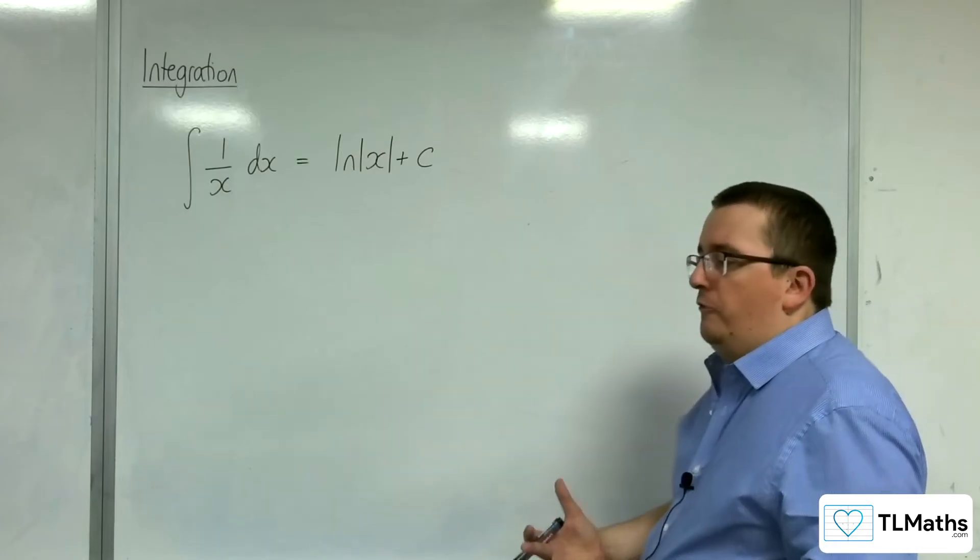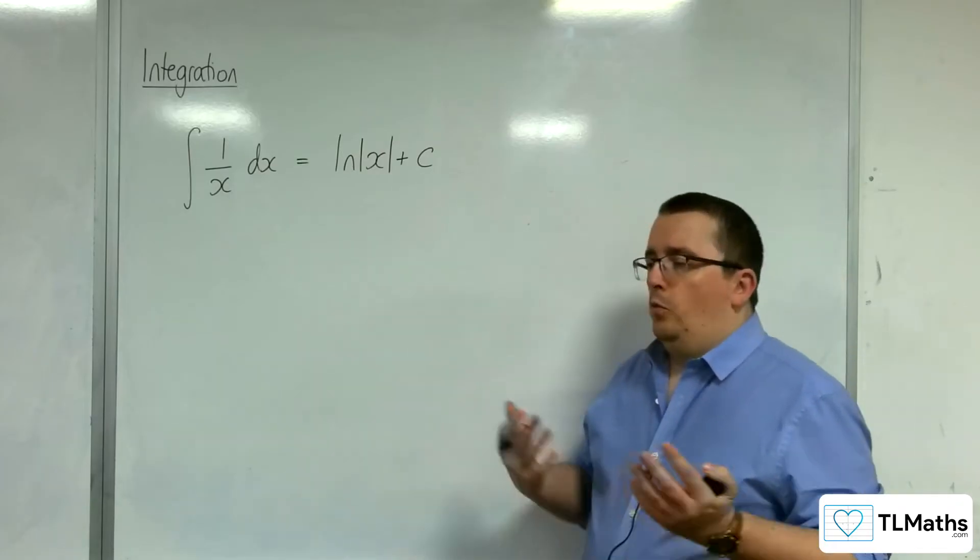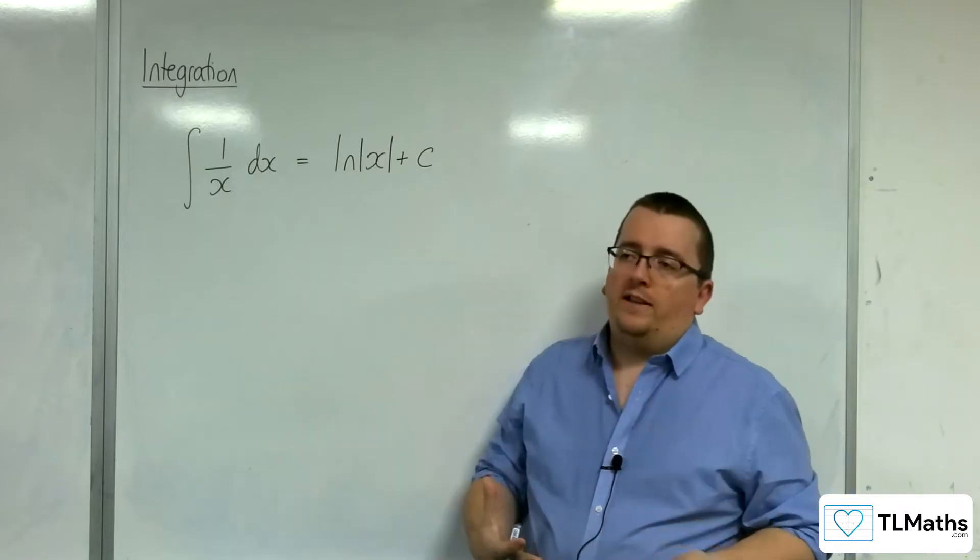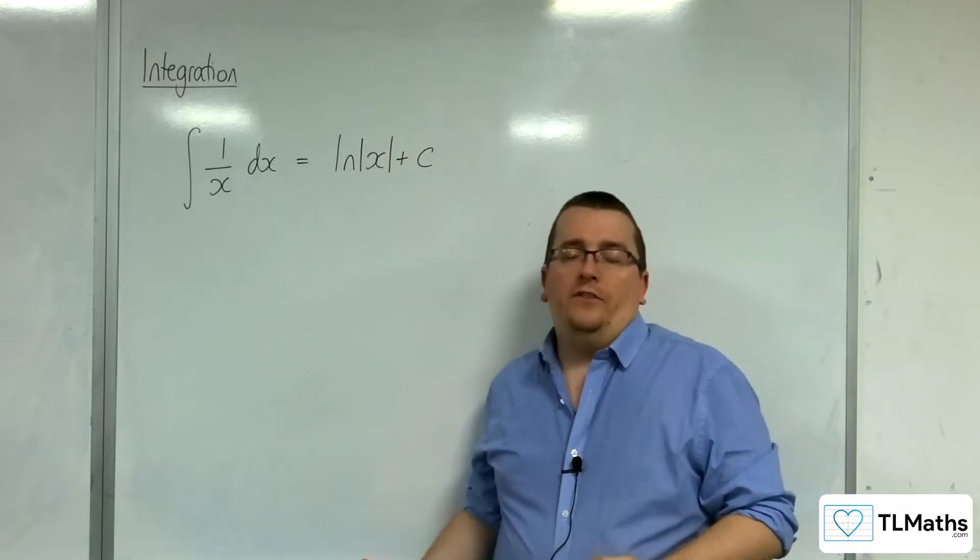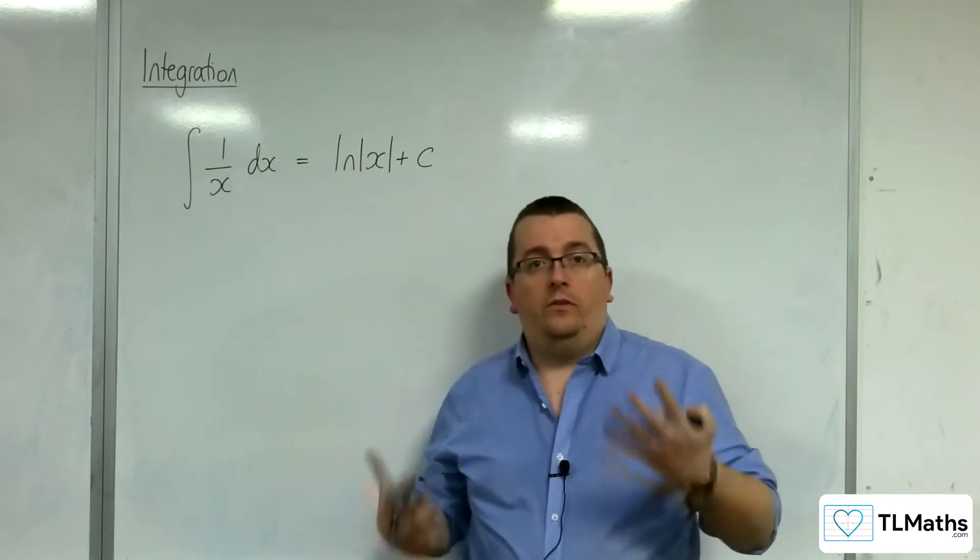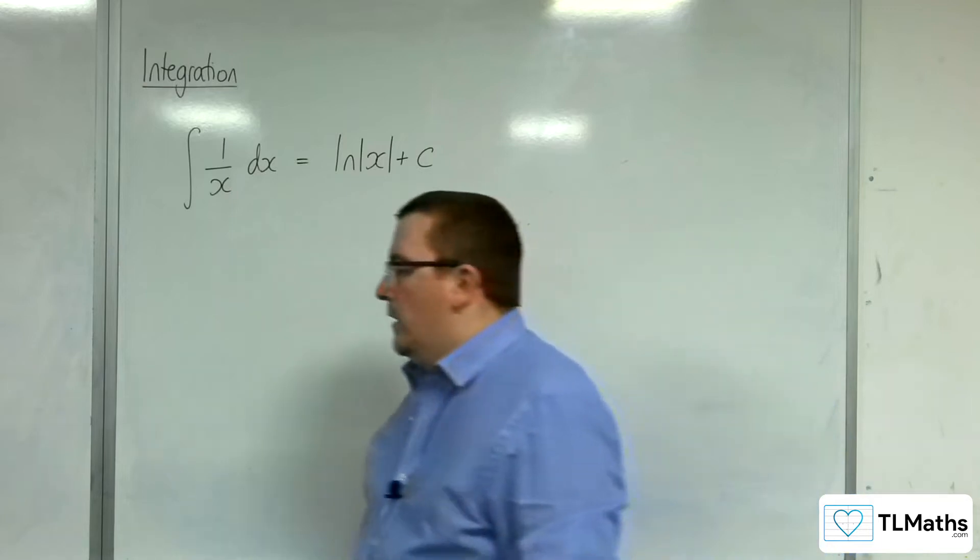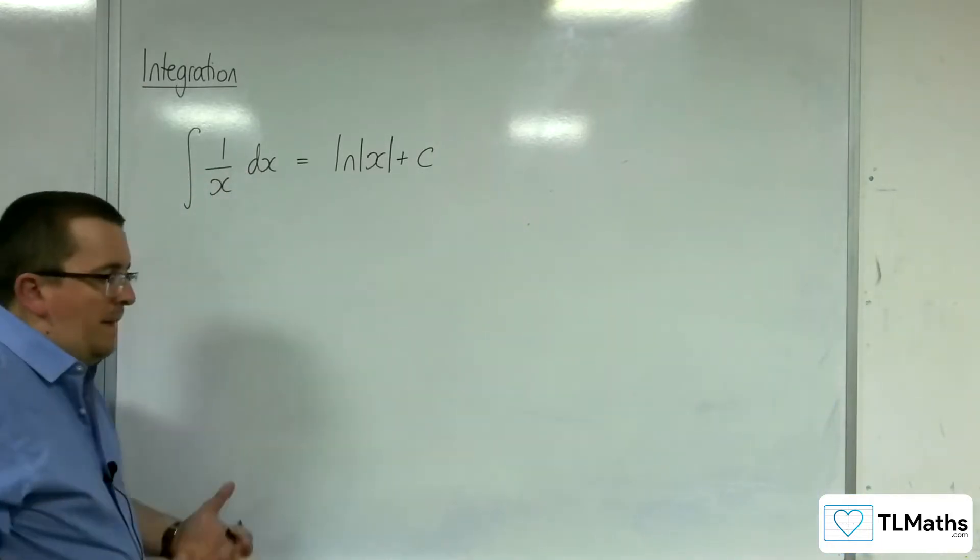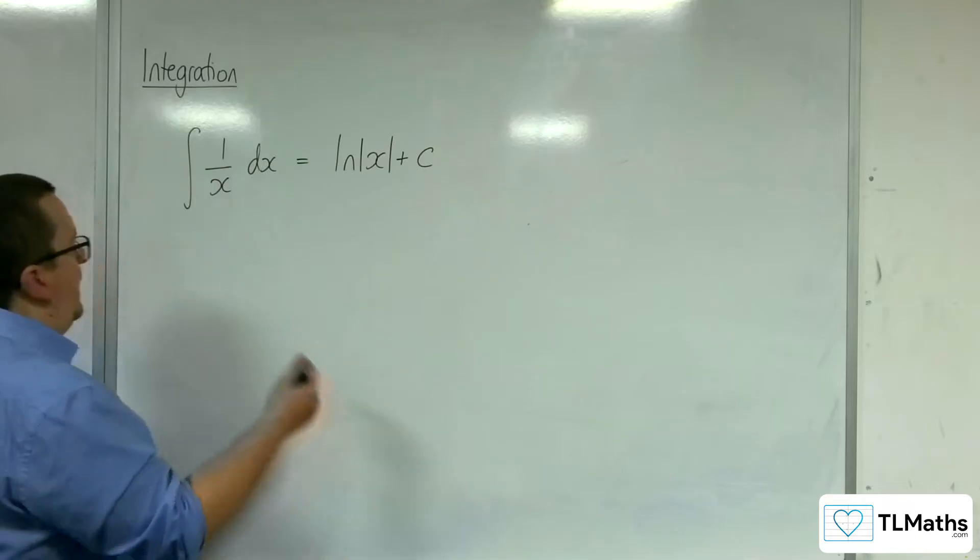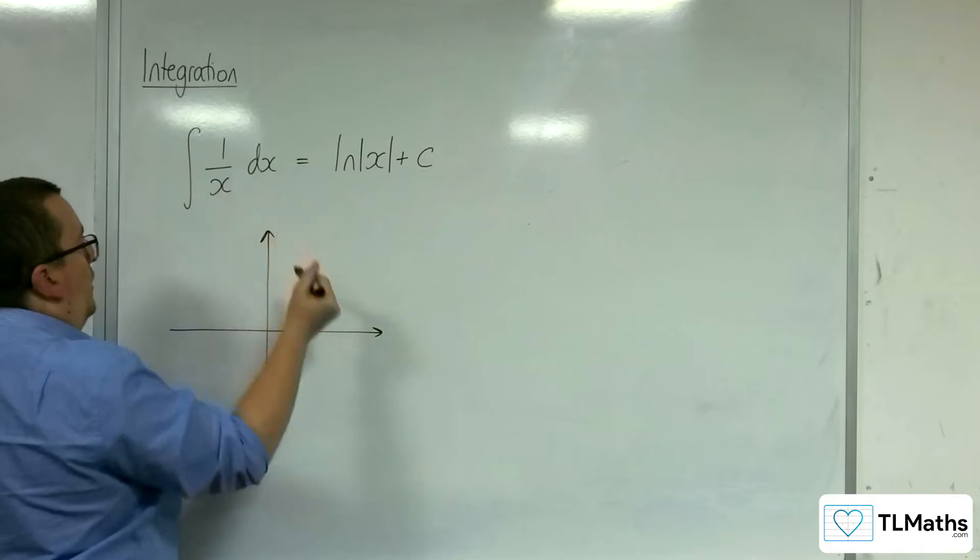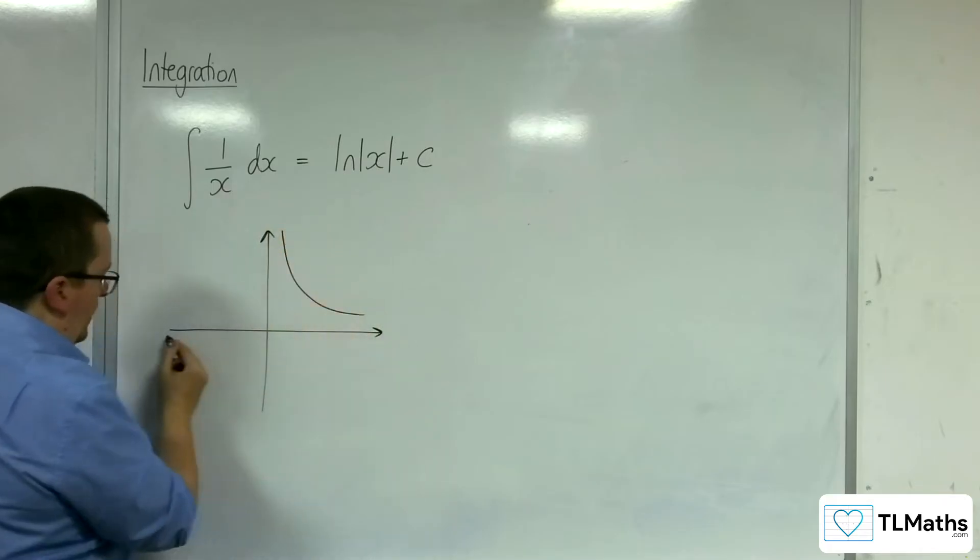Now, when we've looked at this before, the way that I brought it up was because when we look at a definite integral, we can't take the natural logarithm of a negative number, and so this allows it to work. But it makes sense, because we were looking at things like y equals 1 over x. Here's y equals 1 over x.